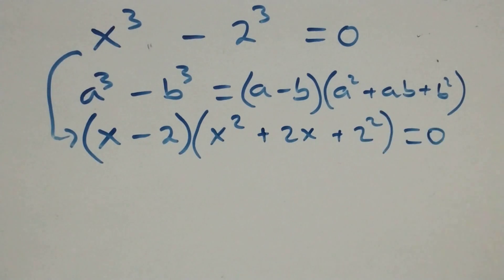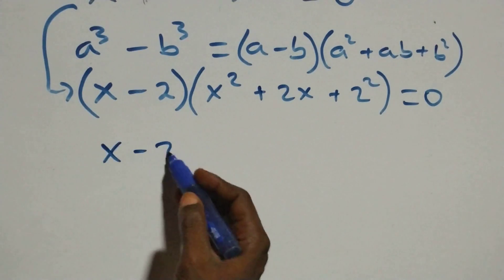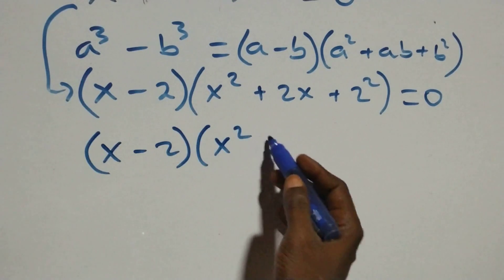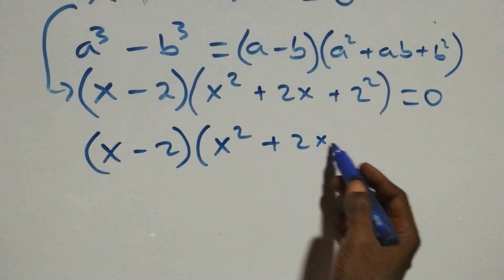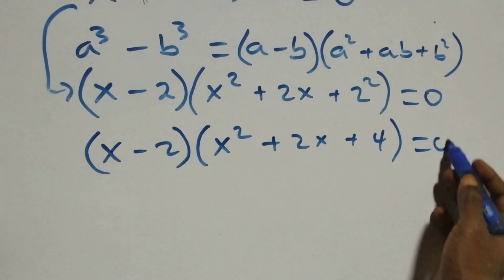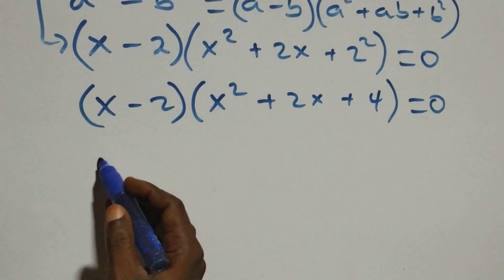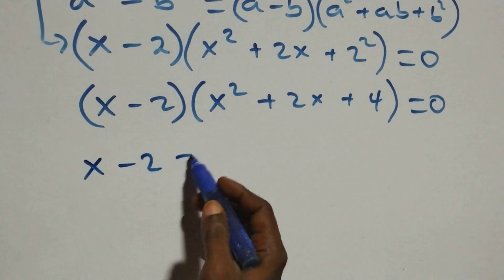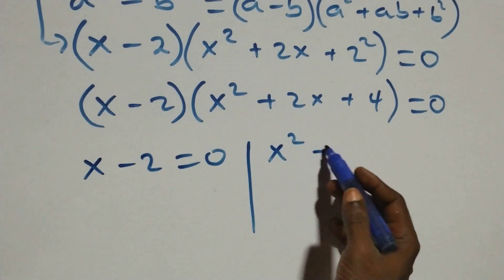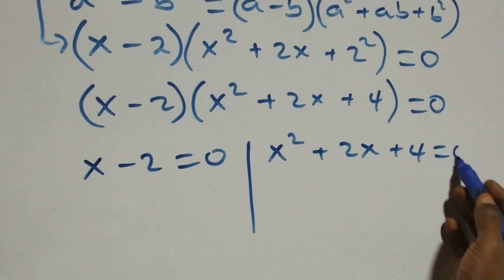This is the same as (x - 2)(x² + 2x + 4) = 0, giving two possible cases: x - 2 = 0, or x² + 2x + 4 = 0.